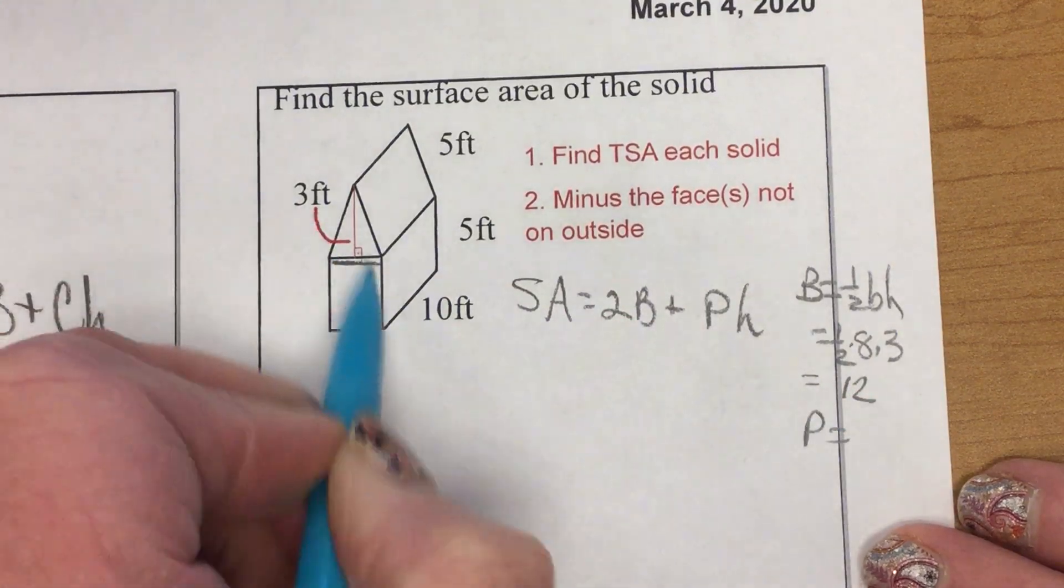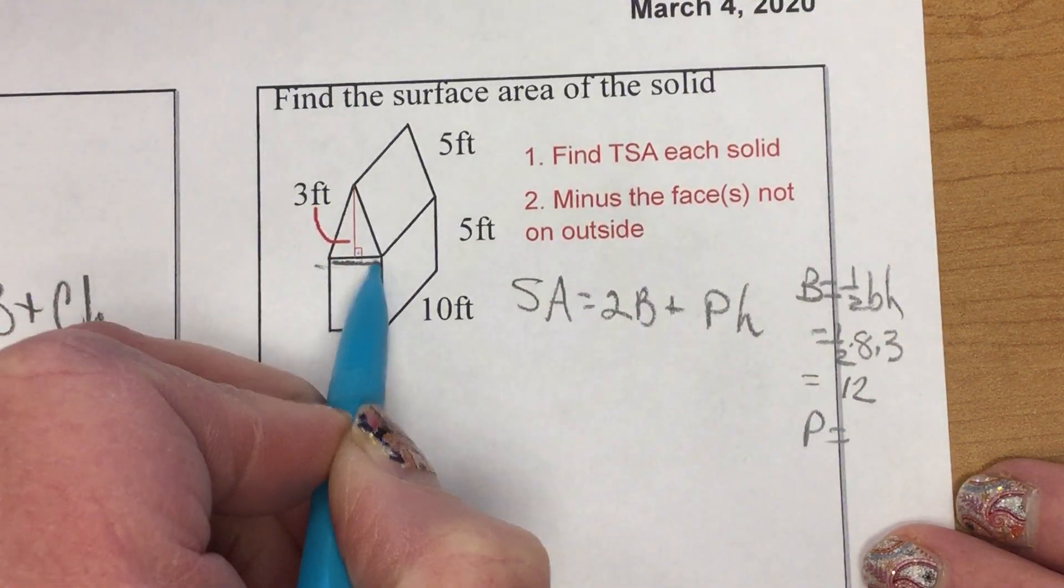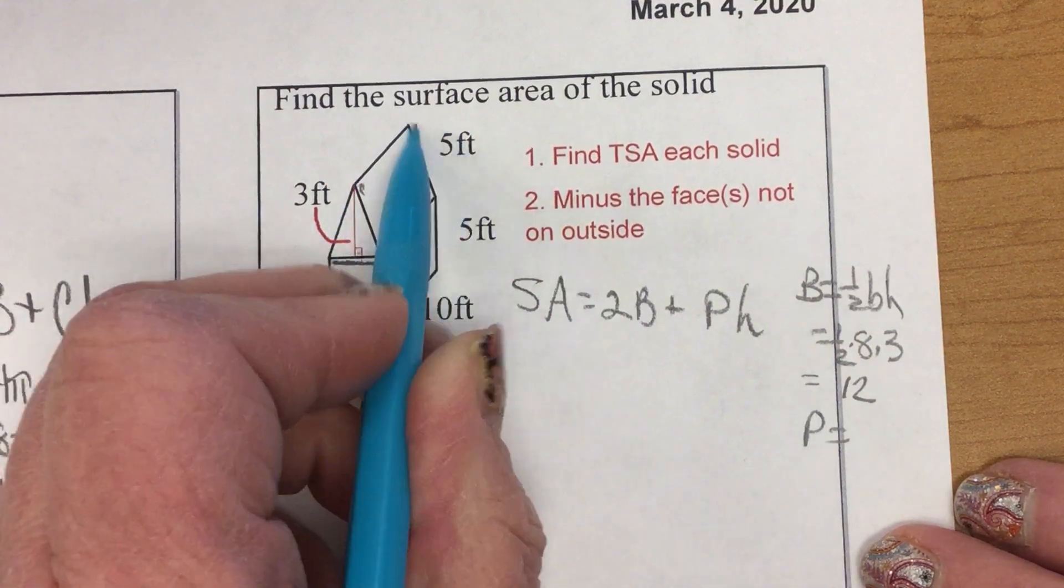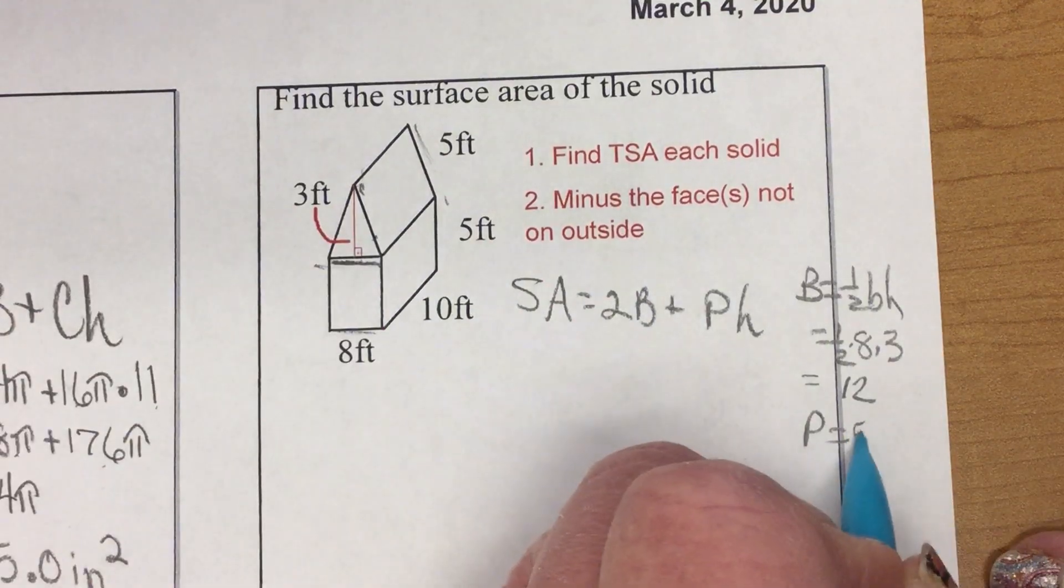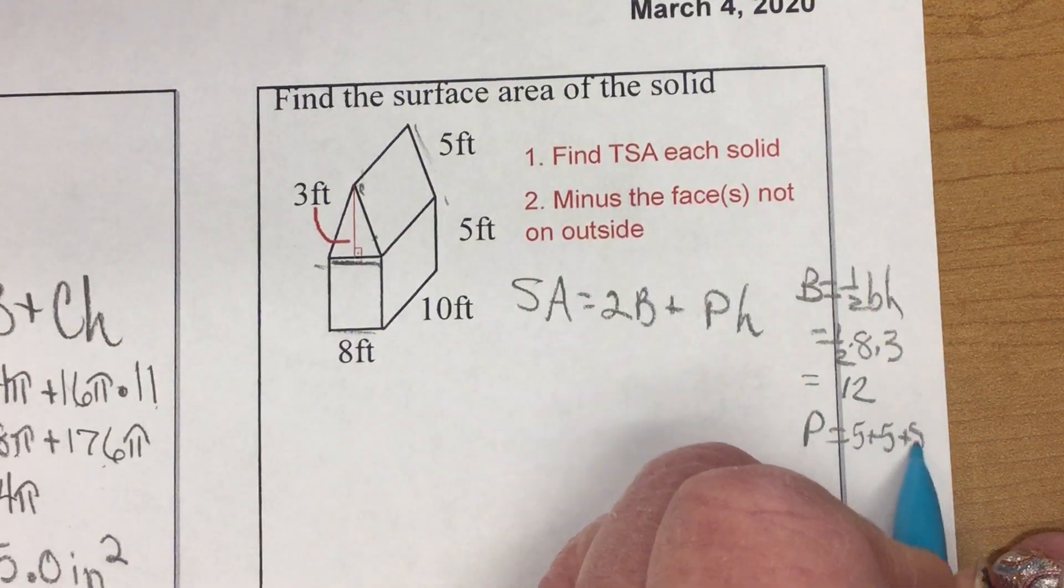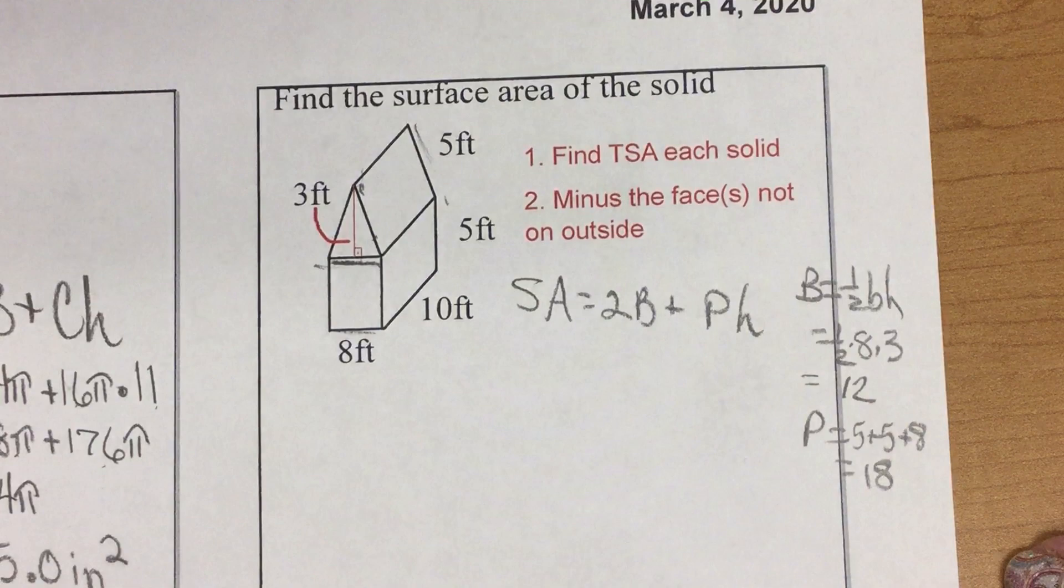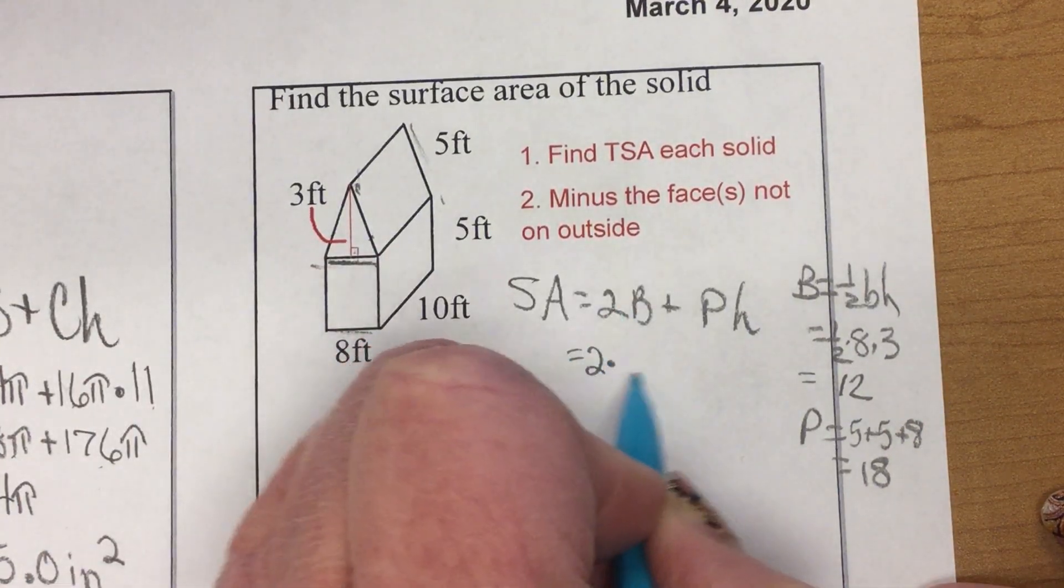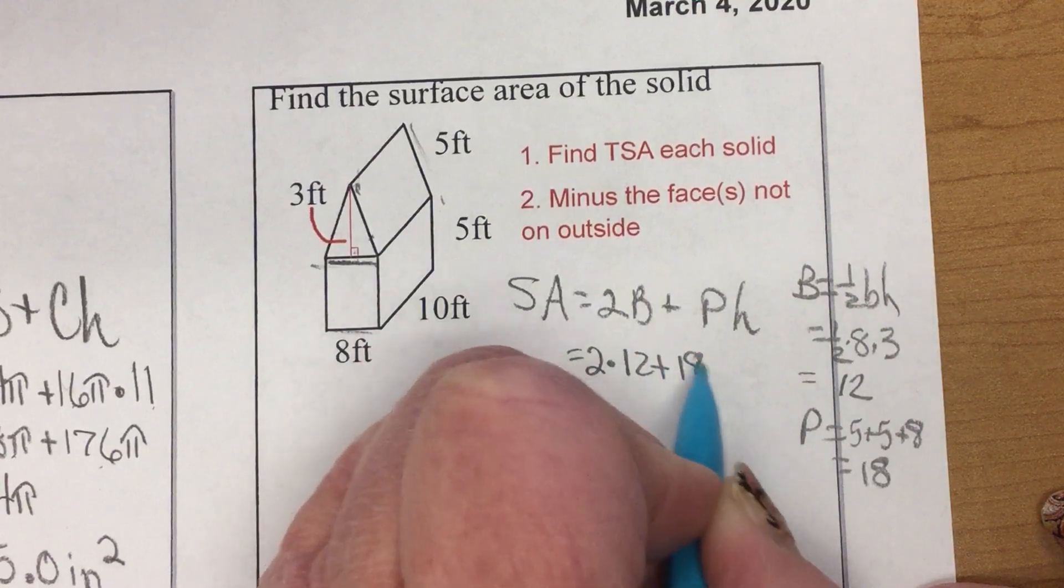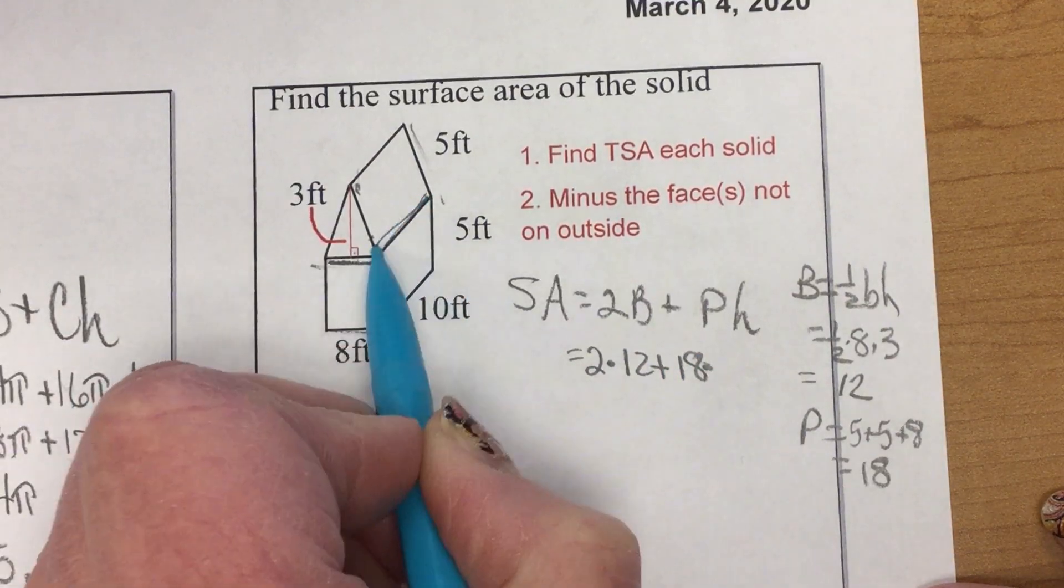Now, this is a base of 8, height of 3. Perimeter of that base is 8, and 5, and 5, because if this side's 5, the other side is 5.